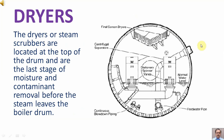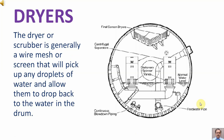The dryers, or steam scrubbers, are located at the top of the drum and are the last stage of moisture and contaminant removal before the steam leaves the boiler drum. The dryer or scrubber is generally a wire mesh or screen that will pick up any droplets of water and allow them to drop back to the water in the drum.